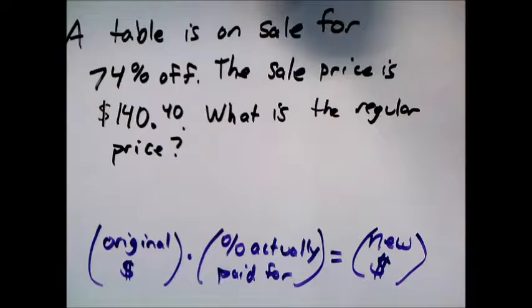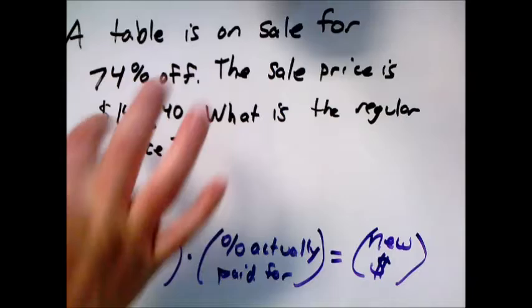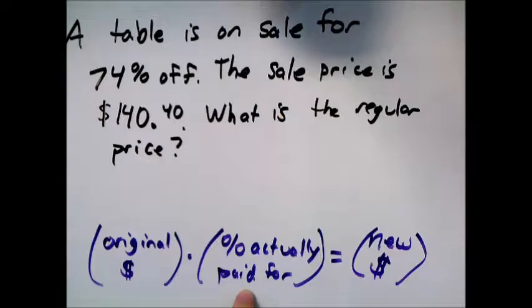Here we're going to look at if they tell us the sale price, can we come up with the original price of something. Something to be careful about here is when they tell you how much off it is, you can't take that percent of the sale price because they were basing the percent on the original price times a percent off to figure out how much you get off. So something to be careful about - don't directly use the 74 with the 140.